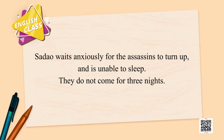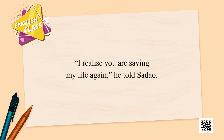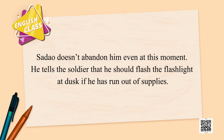Sadao waits anxiously for the assassins, unable to sleep. The assassins do not turn up on the first, second, or third night. Sadao finally makes up his mind to help the American escape. He plans an escape for Tom, the soldier — arranging a boat stocked with food and water and asking Tom to sail to a small island visible from the shore. The island is unguarded and Korean fishing boats pass by; Koreans are allies of Americans and would save the soldier. Tom tells Sadao, 'I realize you are saving my life again.' Sadao even tells the soldier to flash a light at dusk if he runs out of supplies.